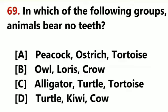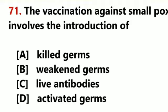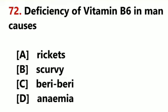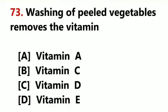In which of the following groups do animals bear no teeth? Peacock, Ostrich, Tortoise. Jaundice is a symptom of disease of the liver. The vaccination against smallpox involves the introduction of weakened germs. Deficiency of vitamin B6 in man causes anemia. Washing of peeled vegetables removes Vitamin C.